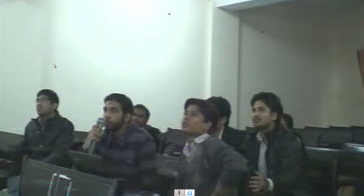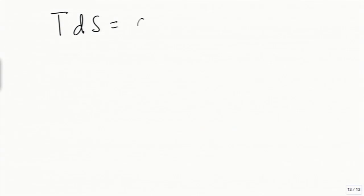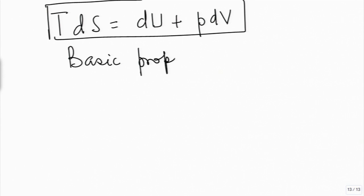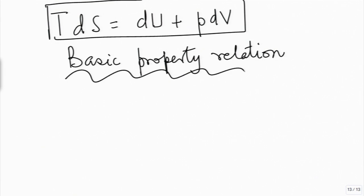A student asks whether TdS = dU + PdV is valid for a closed system, open system, or all systems. This is a basic property relation—it is not for any particular process. As a relation between properties of fluids, you can always use it. It has nothing to do with whether the system is open or closed.